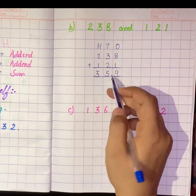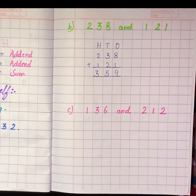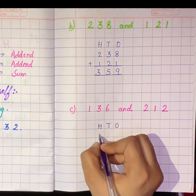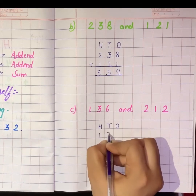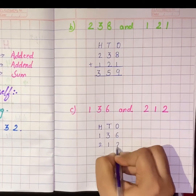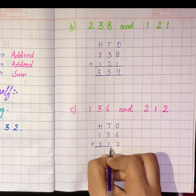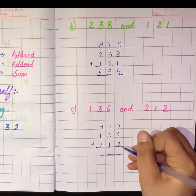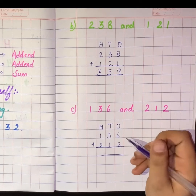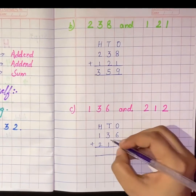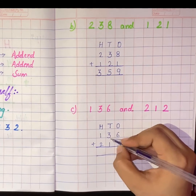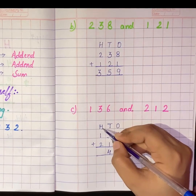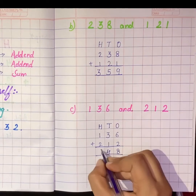Now let us try the third question. First we will put these numbers under the columns of hundreds, tens, and ones. Now let us add the ones place: 6 plus 2 equals 8. Now add the tens place: 3 plus 1 equals 4. Now add the hundreds place: 1 plus 2 equals 3.